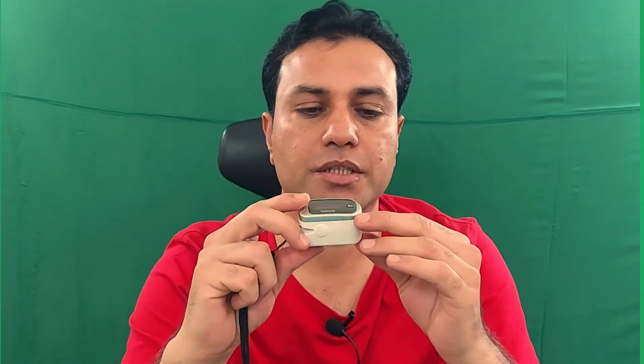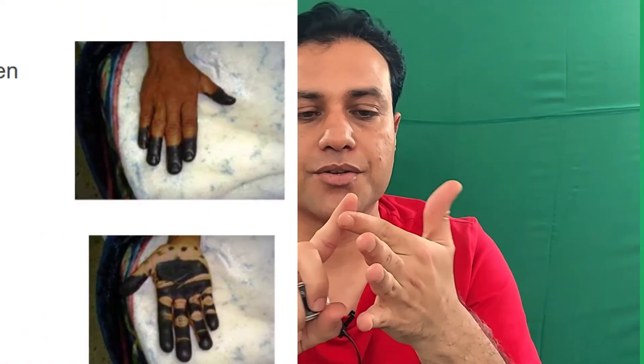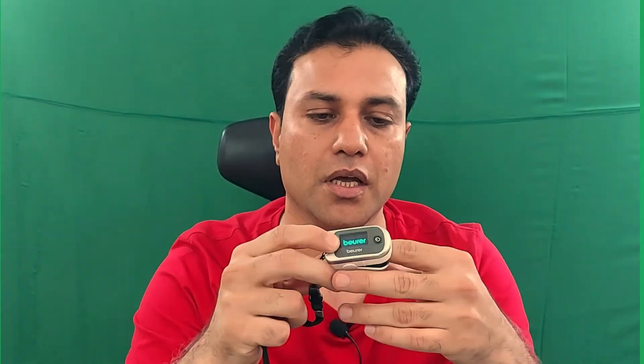Now let me explain the limitations of this device. If there is color on your nails, henna, or any other color on your finger, that will affect the blood oxygen saturation result. The best method is to remove any color or varnish from the nail and wash your finger with normal water — not hot or cold water — as that will also affect the oxygen saturation result.